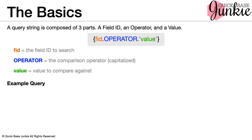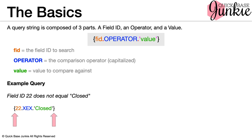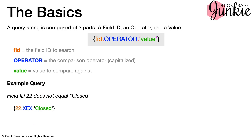Let's see what this looks like for an actual query string. In this example, we want to say field ID 22 does not equal closed. Our query string will look just like this: in a set of curly brackets, we start with the field ID number 22, then a period and our operator does not equal, which is defined by XEX in all caps, another period, and then in a set of single quotations, the word closed. That's the basic construct of a query.